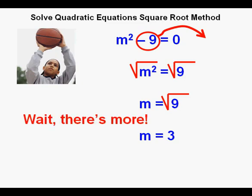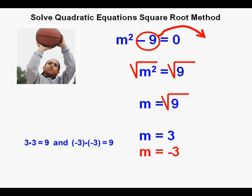But wait, there's more. Do you remember when we said that quadratic equations can have two solutions? And that's the case here. There is another number that multiplied by itself also equals 9. And that number is negative 3 because negative 3 times negative 3 also equals 9.